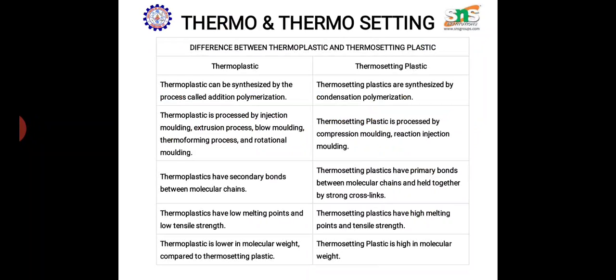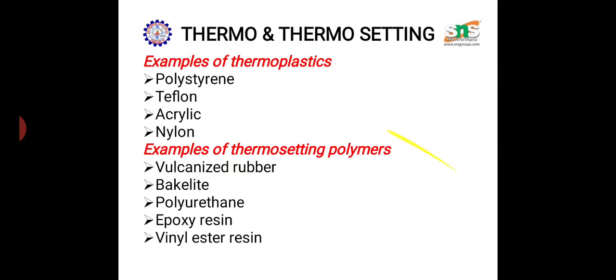Thermosetting plastics won't melt on heating; they can withstand very high temperatures, but after that temperature limit they will burn to carbon. Thermosetting plastics cannot be recycled, whereas thermoplastics can be recycled. Thermoplastics have low molecular weight while thermosetting plastics have high molecular weight.